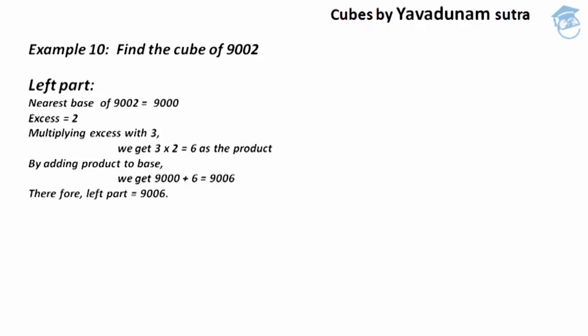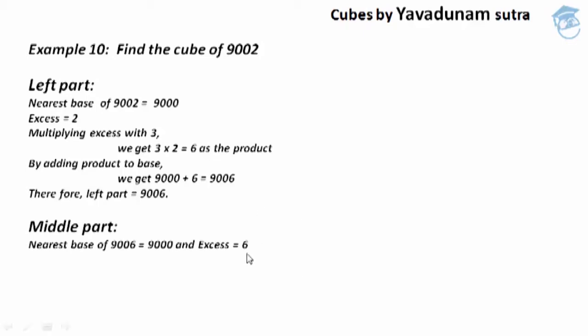After finding the left part, we move to the middle part. The first step here is to take the answer from the left part and find the nearest base as well as the excess. The nearest base of 9006 is 9000 and the excess is 6, found by comparing 9006 with 9000.